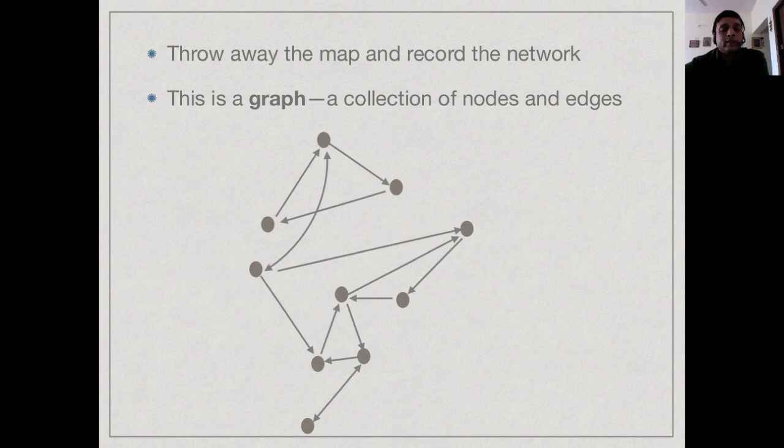The cities are the grey circles and the flights are the arrows. The arrowheads indicate the direction. If there is an arrowhead in one direction, it is a one-directional flight. If there is an arrowhead at both ends, it means it is a bi-directional flight.